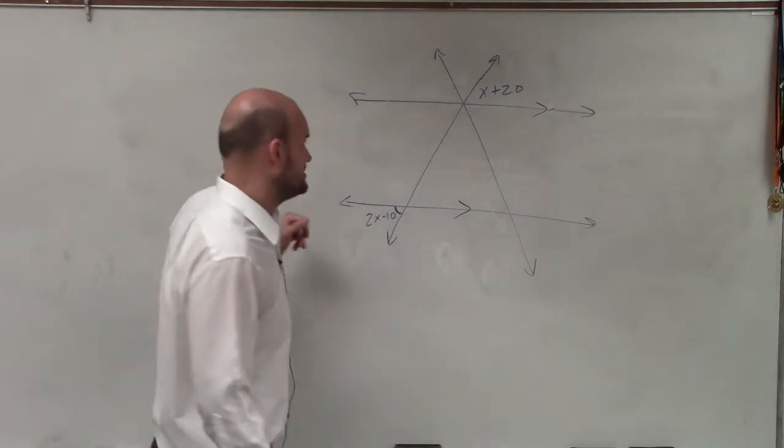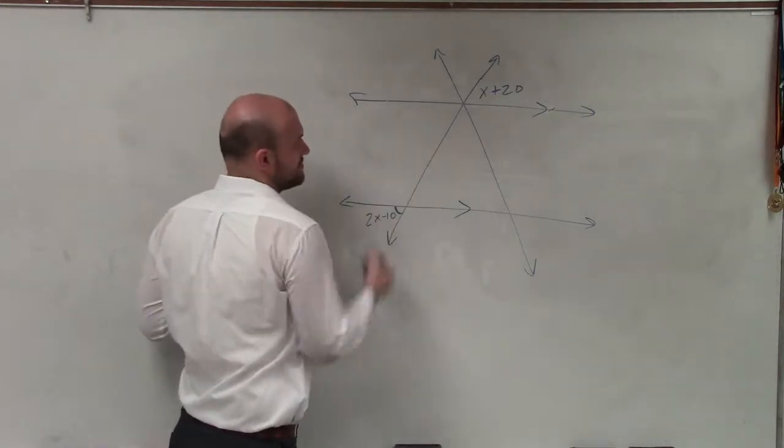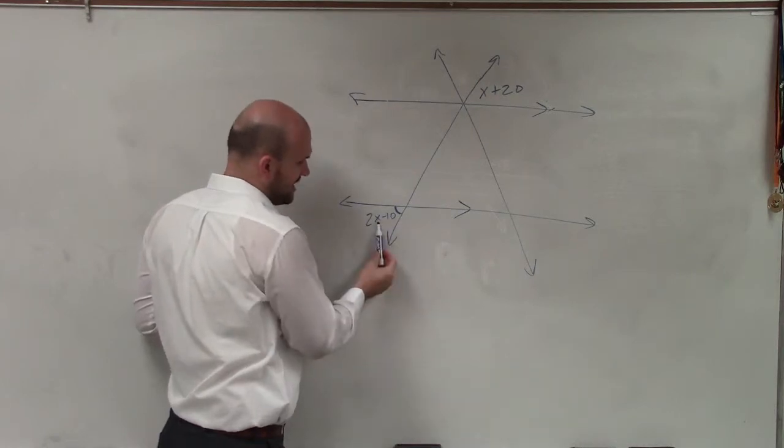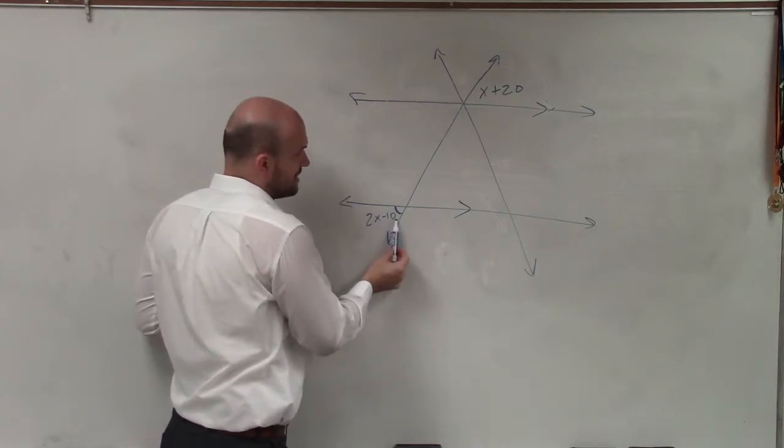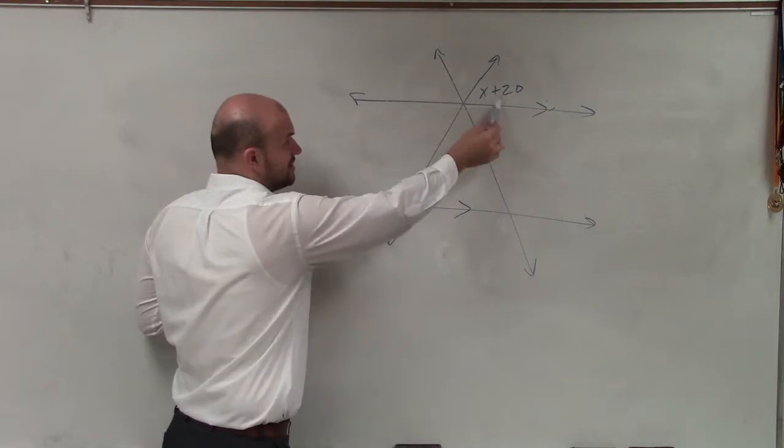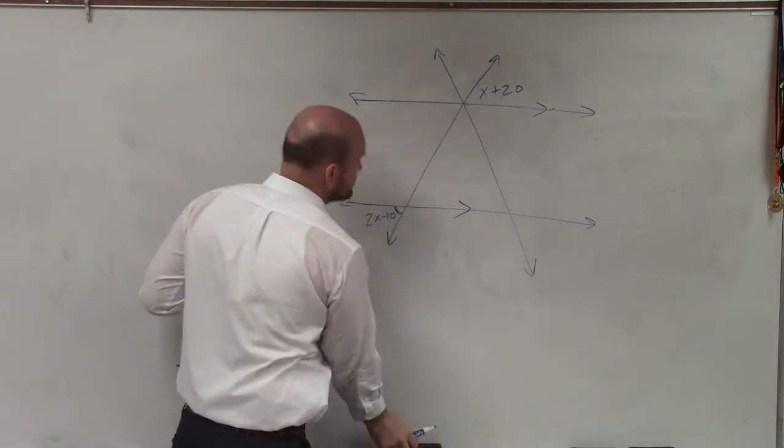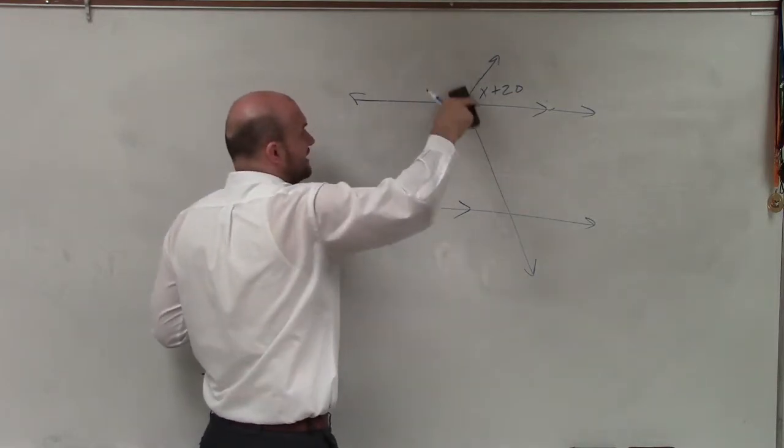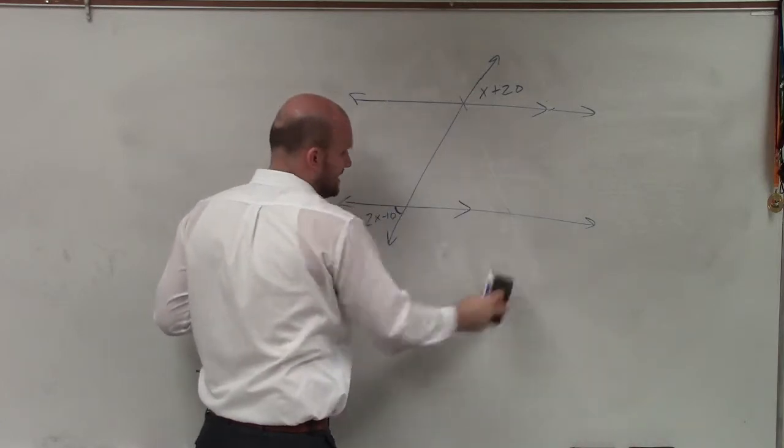So I go ahead and look at this, and I say, all right, so here's my parallel lines. Which transversal am I going to want to use? Well, this line is on this transversal, or this angle is on this transversal, and this one is on that transversal. So really, this other transversal is not doing anything except probably just confusing me more than it has to.